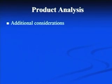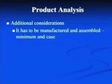Additional considerations in product analysis: the product idea must be manufactured and then assembled. We have to evaluate the manufacturability — the ease of manufacturing — and assemblability — the ease of assembling all components to get the end product. Good manufacturability means the product is easier and cheaper to manufacture. If it is easy to assemble all components together, the cost of assembly will be less and overall product cost will be reasonably low.